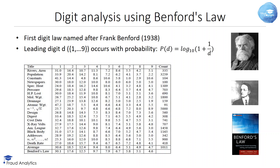This surprising phenomenon was first discovered by astronomer Newcomb in 1881 and later rediscovered by Benford in 1938. Benford noted that in a book of logarithms, the first pages with low first digits are more frequently used than the last pages with digits 7, 8, and 9, since they were more dirty. At that time, logarithm tables were frequently used to speed up the multiplication of two numbers.